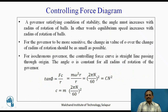A governor satisfying the condition of stability requires that the angle φ must increase with the radius of rotation of the ball, as shown in the figure. In other words, the equilibrium speed increases with the radius of rotation. For the governor to be more sensitive, the change in the value of φ over the change in radius of rotation should be as small as possible. For an isochronous governor, the controlling force curve is a straight line passing through the origin.